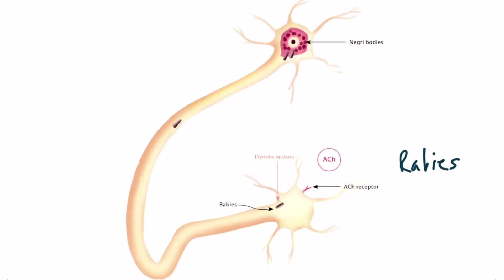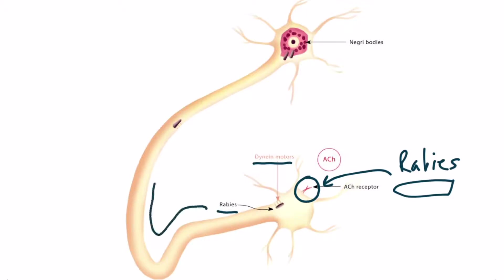The rabies virus attacks the acetylcholine receptor, then is taken into the cell and the dynein motors carry it up in a retrograde fashion. You can see it again here being carried by the dynein motors. Finally, they enter the cell body. In addition to those bullet-shaped envelopes, which you can see on histology, you can also see those Negri bodies.